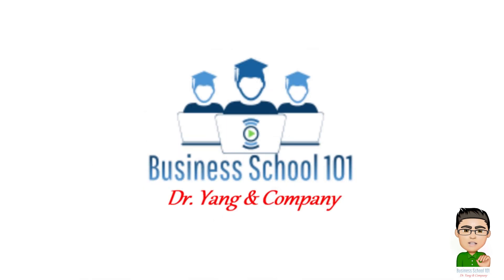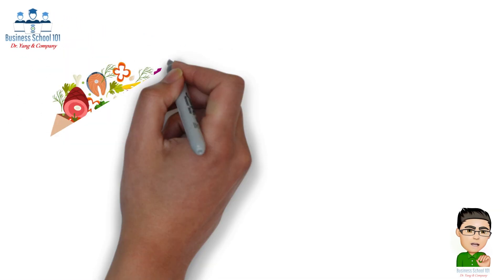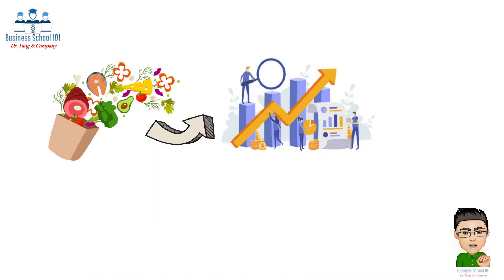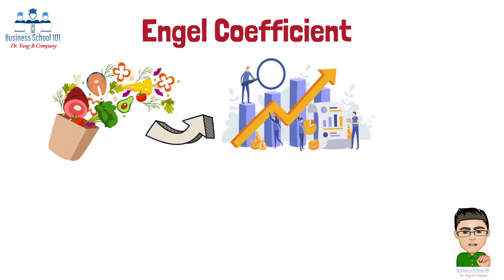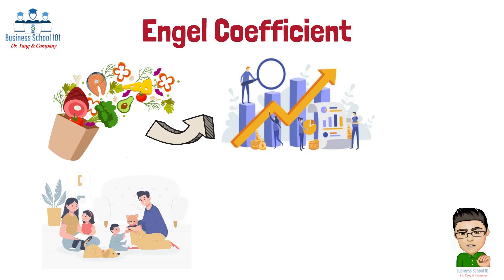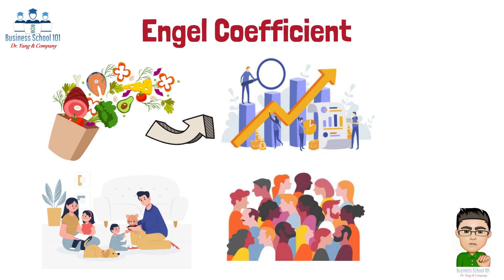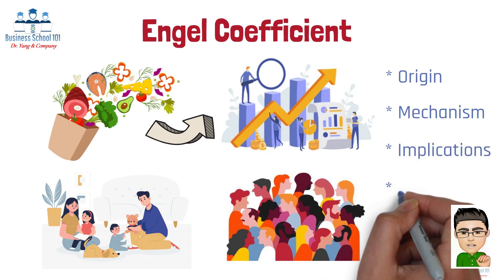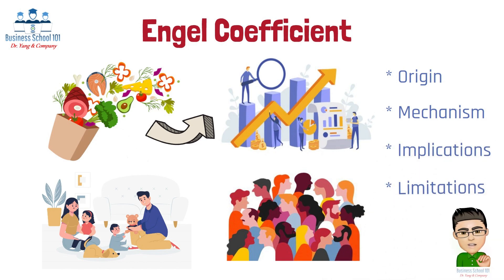Hello everyone, welcome to Business School 101. Have you ever wondered how the way you spend your money on food might reveal insights about your country's economic health? This is where the Engel Coefficient comes into play, a fascinating economic measure that paints a picture of both individual household trends and broader societal patterns. In this video, I will discuss what the Engel Coefficient is, how it works, its implications, and its limitations.